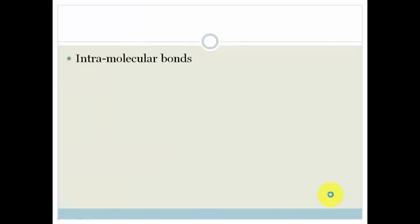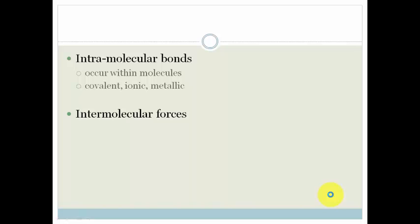First of all, we need to distinguish between intramolecular bonds and intermolecular forces. Intramolecular bonds you've learned about already — they are the bonds within the molecule. They are what makes molecules actually bond; two or more atoms bond to become a molecule. You'll recognize them: covalent, ionic, and metallic bonding, which is your sea of delocalized electrons.